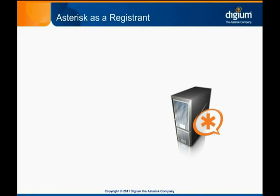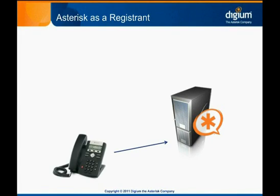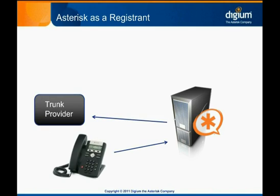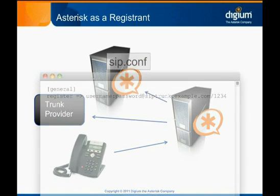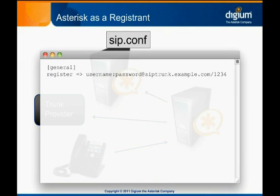Throughout this module, we have used the generic term VoIP device repeatedly. We haven't specifically said phone very often because registration doesn't necessarily have to involve a phone. It's possible for Asterisk to register to a VoIP trunking provider or to another Asterisk system. In the general section at the top of sip.conf or eeks.conf, you can add a line in the format shown here to tell Asterisk to register to a remote server. This is a simplified example for the sake of instruction — there are several other settings you can configure in the register statement, which you can read about in the sample configuration files.